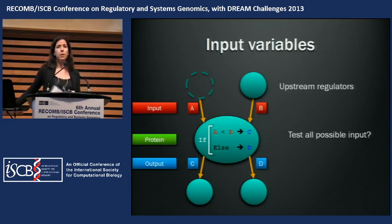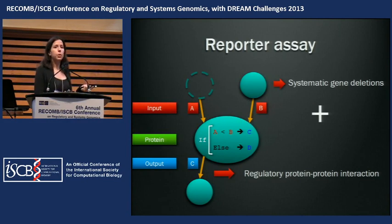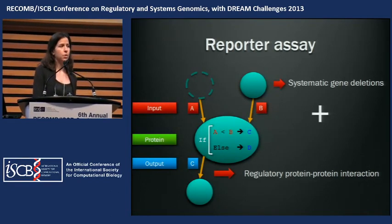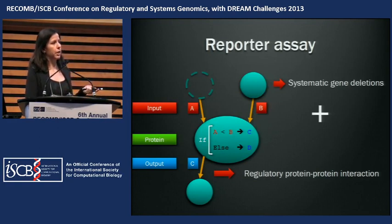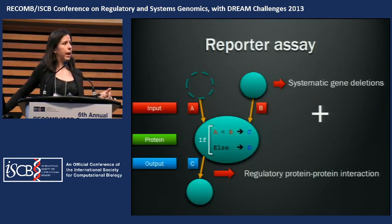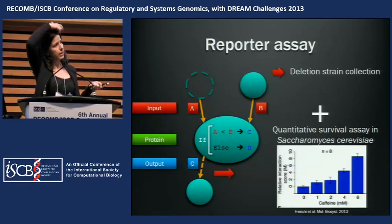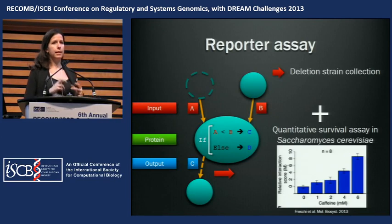To address this issue, in our lab we developed a reporter assay that allows us to address what the effect of a gene deletion is — not on a protein phenotype, but rather on one of its output variables. To do that, we leverage the information that we have about a regulatory protein-protein interaction. And what we did is couple such known regulatory interactions with a quantitative survival assay in budding yeast, and then cross that with a collection of gene deletions, so that we can systematically ask what is the impact of deleting a gene on this particular output, in a quantitative manner.